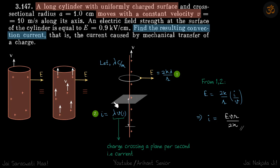Let's take a hypothetical plane and charge below will be crossing this plane with the velocity V. In one second how much charge is crossing? That will be the length of wire which is equal to V.